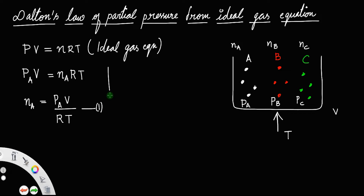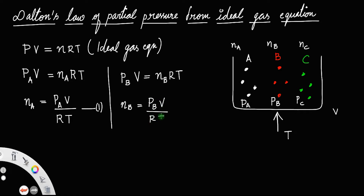Similarly, for gas B, we have PB·V = NB·R·T, therefore NB = PB·V divided by RT. Let us call that equation number 2. Similarly, NC = PC·V divided by RT. Let us call that equation number 3.